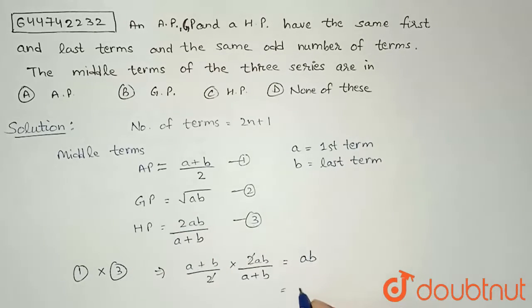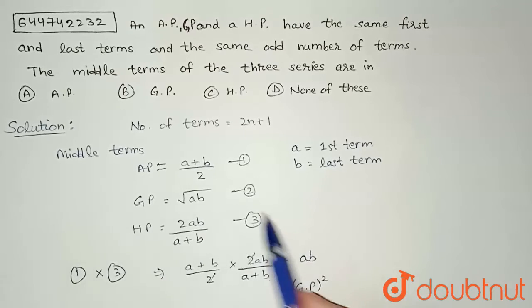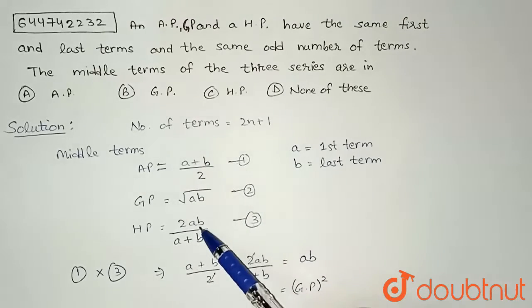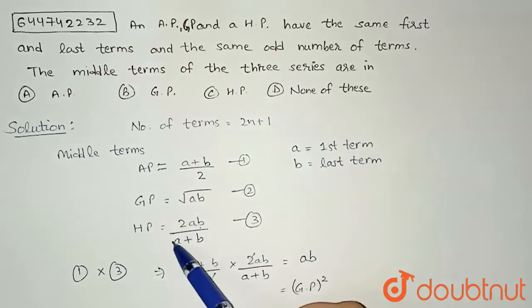this equals GP squared. And since we can see here that when we multiplied these two terms we got the square of this middle term, this implies that these three middle terms are in GP. So the correct option is option B. Thank you.